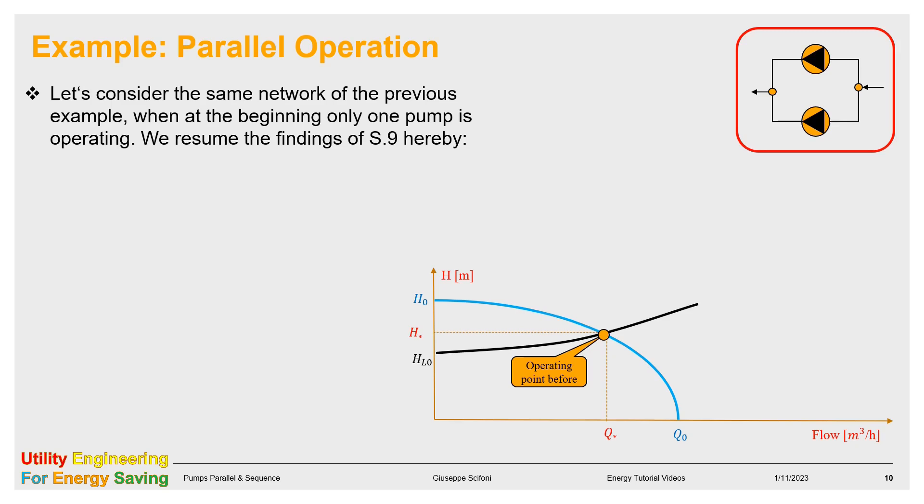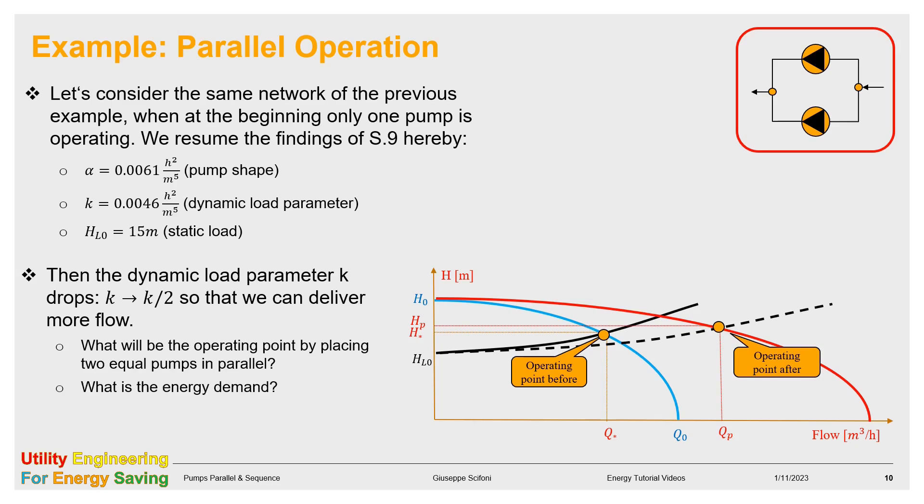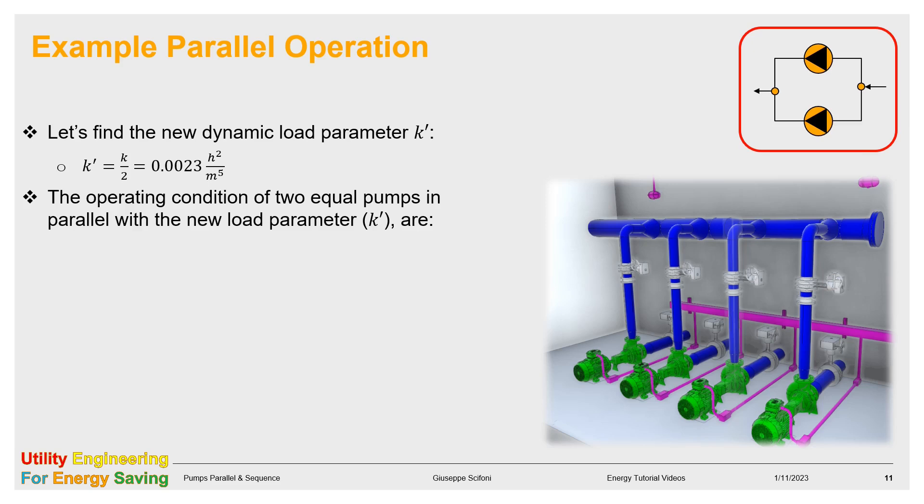For the parallel operation example, we keep the same network of the previous example when only one pump was operating. Let's resume here by the findings of slide number 9. We assume now that the dynamic load parameter K drops to the half and we want to deliver more flow by adding a second equal pump in parallel. Questions are the same of previous problem under changed conditions. The new dynamic load parameter K' is the half of K, also 0.0023.